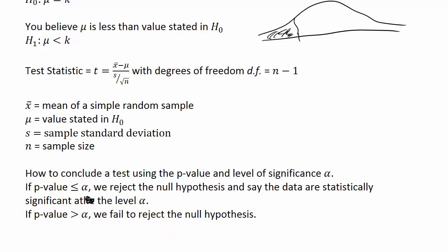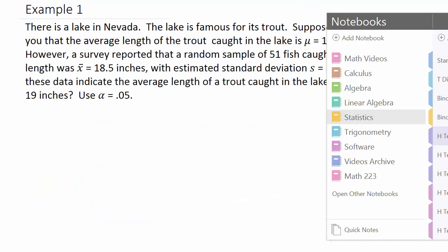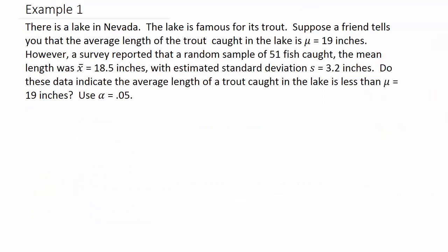Let's get started on our example. There's a lake in Nevada. The lake is famous for its trout. Suppose you have a friend that tells you the average length of the trout caught in the lake is mu equals 19 inches. That's of all the trout in the lake, the population mean.